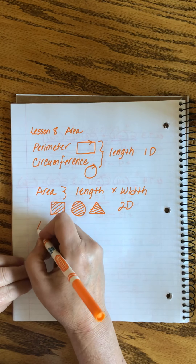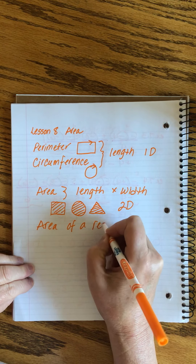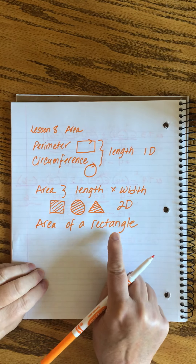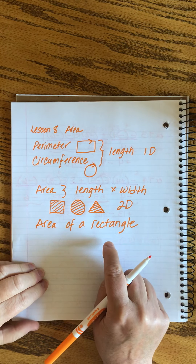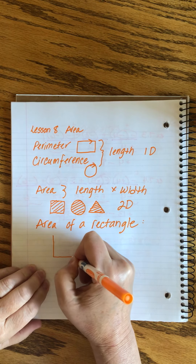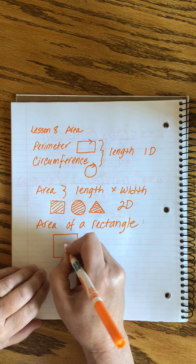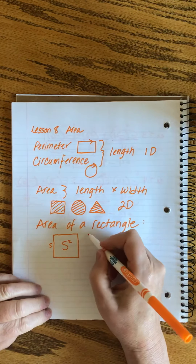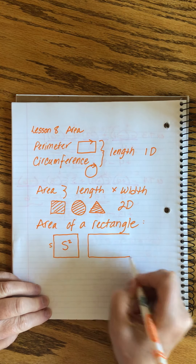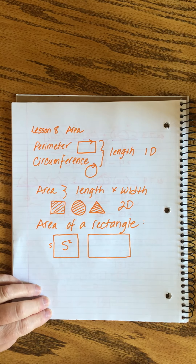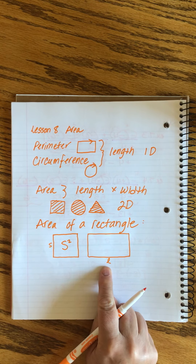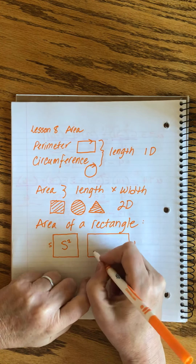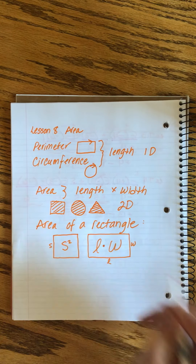Finding the area of a rectangle — by that I mean a four-sided object with 90-degree corners. It could be a square, or if the sides are not the same length, it could be a rectangle. If it's a perfect square, take the length of any side and square it. If it's a rectangle, we call the longer side the length and the shorter side the width. The formula is length times width.